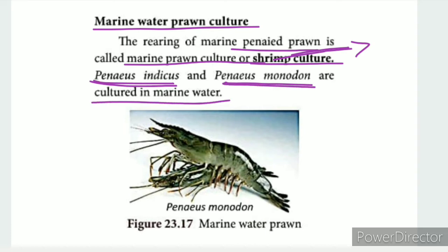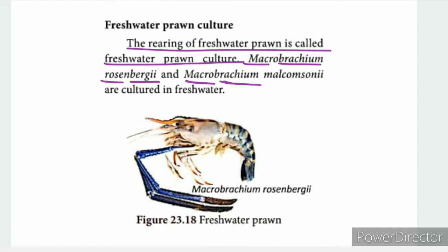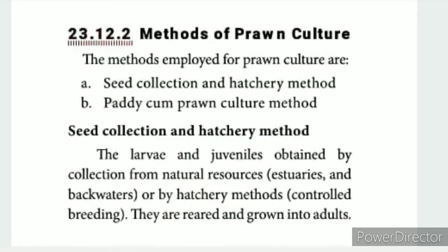Some RONs are cultured in marine water. For freshwater RON culture, the species cultured include Macrobrachium rosenbergii and Macrobrachium malcolmsonii, both of which are cultured in freshwater.